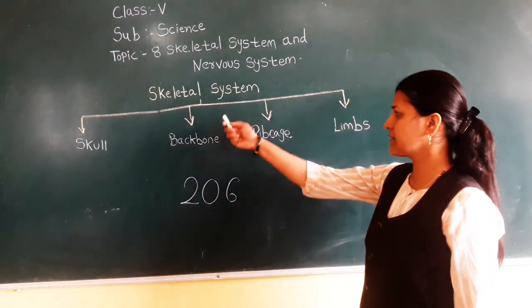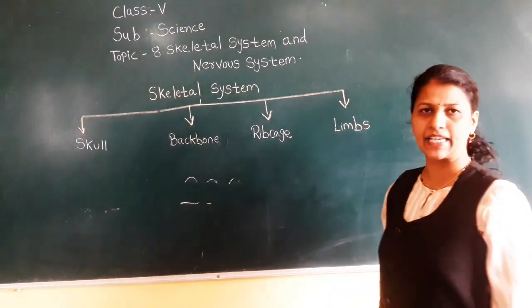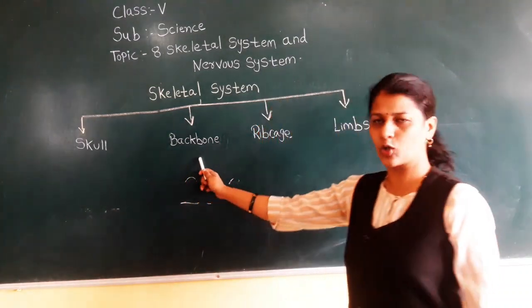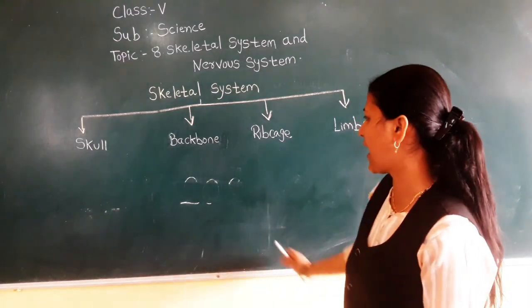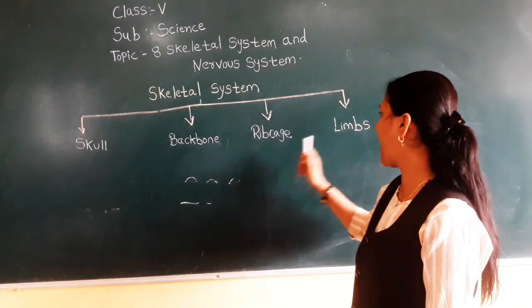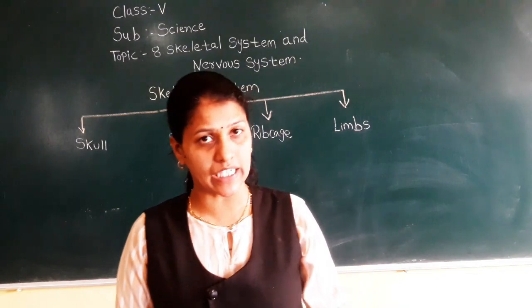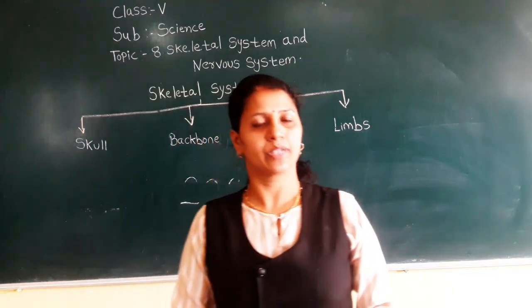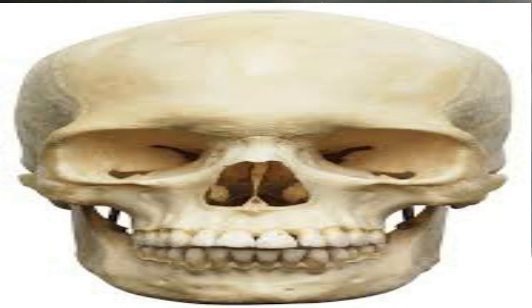The skeletal system is mainly classified into four types: skull, backbone, rib cage, and limbs. We are going to study them in detail. First is the skull — this is a skull.